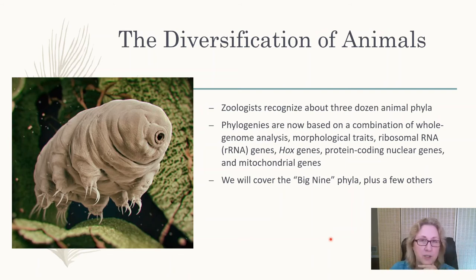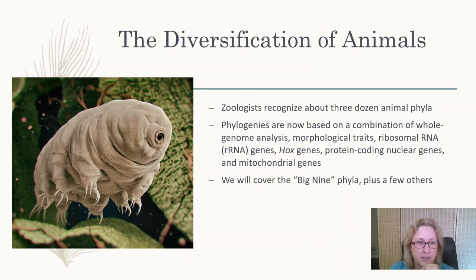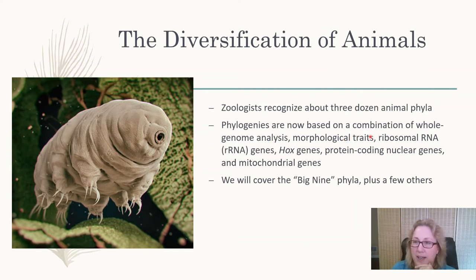The Big Nine phyla account for more than 90 percent of all known animal species, so we'll spend a lot of time on them. We'll also discuss a few others important for understanding animal evolution even though they don't have many species today — like tardigrades, which are in their own phylum with only dozens of known species, but are very cool.